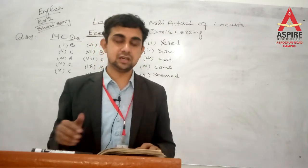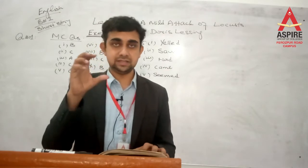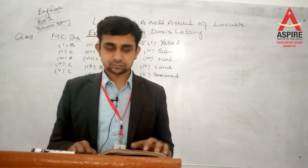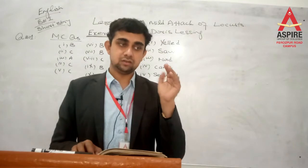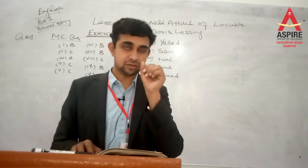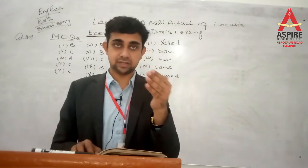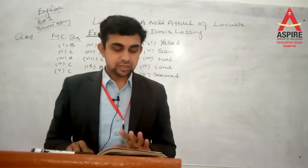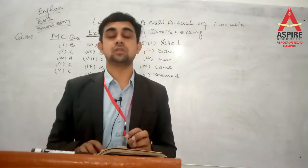Question number 1: What are locusts? Locusts are small flying insects. They are found in hot countries like Asia and Africa. They travel in the form of swarms — لشکر کی صورت میں سفر کرتے ہیں. They eat and destroy the crops — یہ فصلوں کو کھا جاتے ہیں اور انہیں تباہ کرتے ہیں.